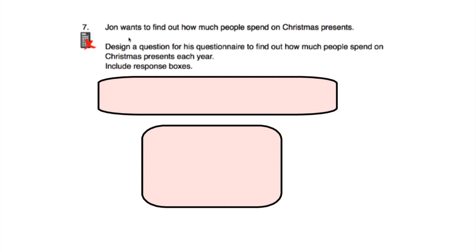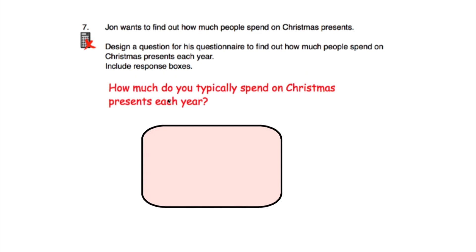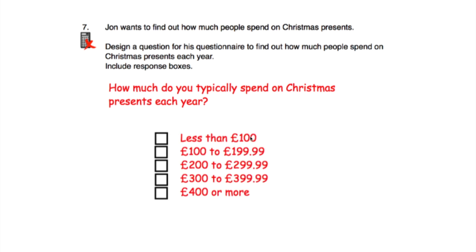Question seven says John wants to find out how much people spend on Christmas presents each year — design a question for his questionnaire including response boxes. The question I've written is: 'How much do you typically spend on Christmas presents each year?' with boxes: less than £100, £100 to £199.99, £200 to £299.99, £300 to £399.99, and £400 or more. The boxes don't overlap and cover all values, so everyone has a box to tick.